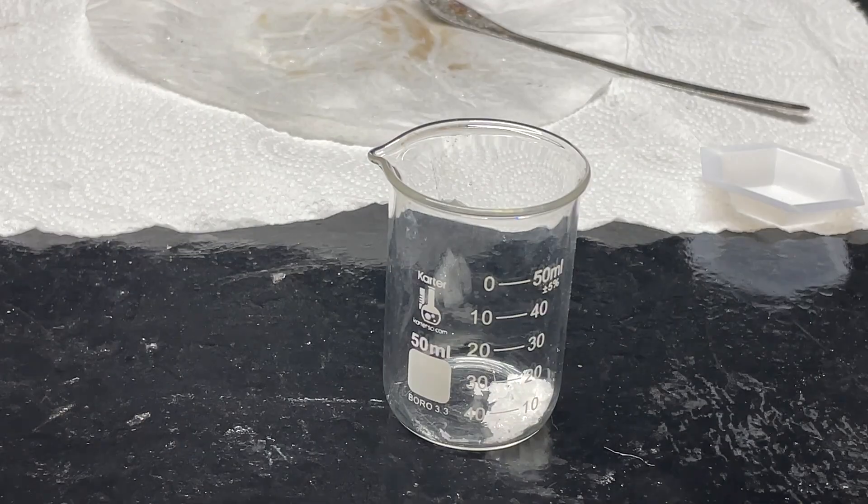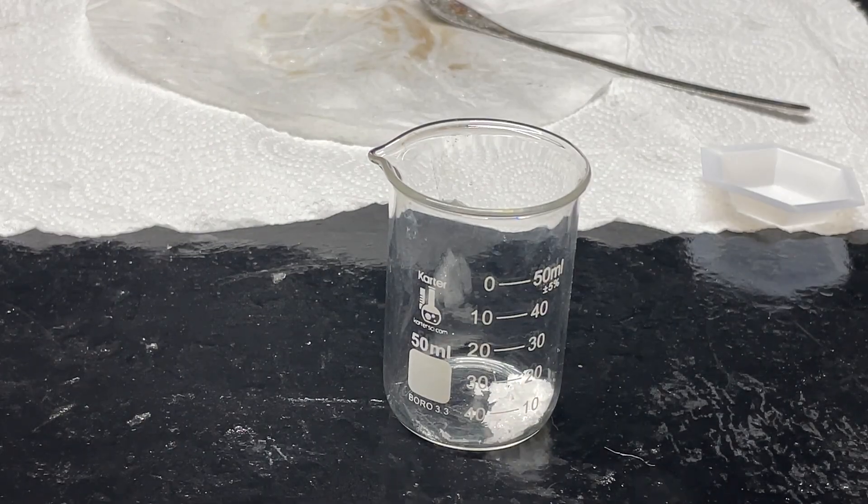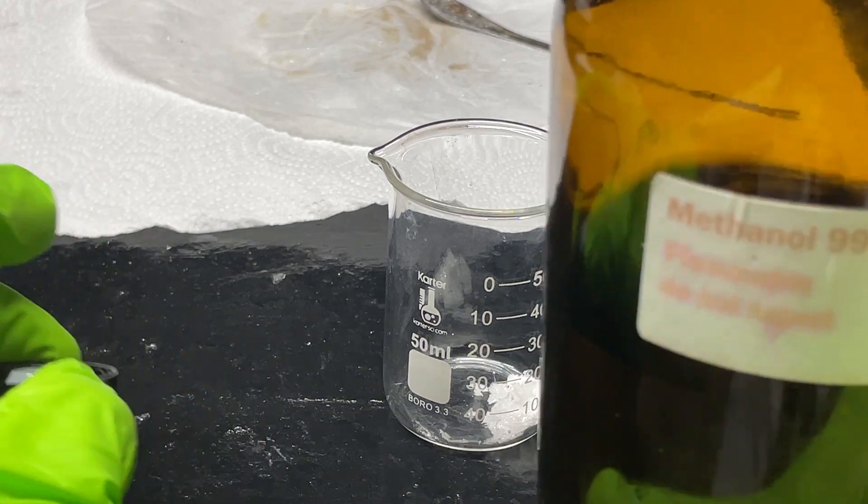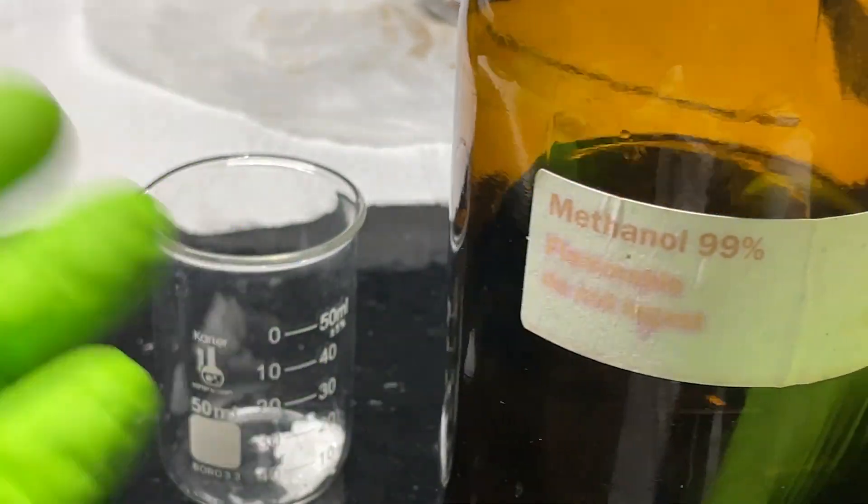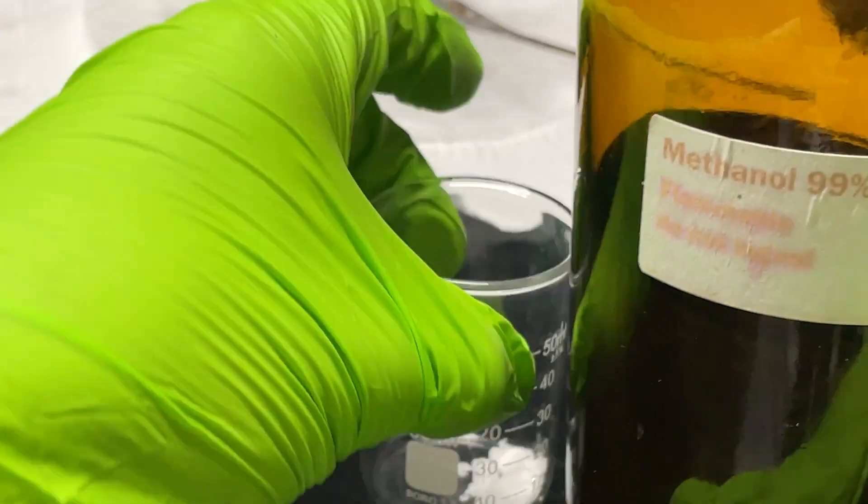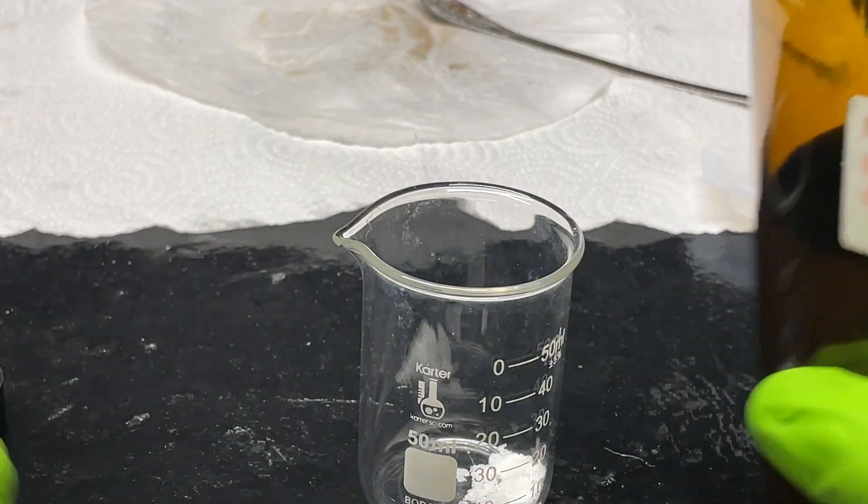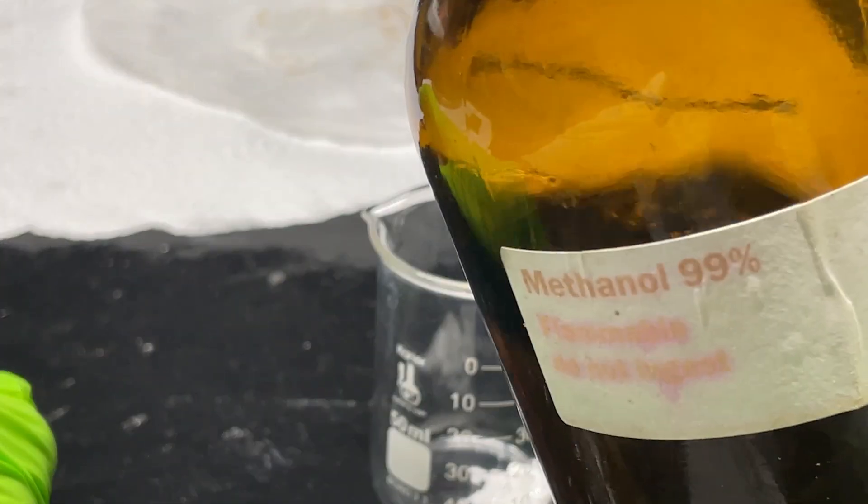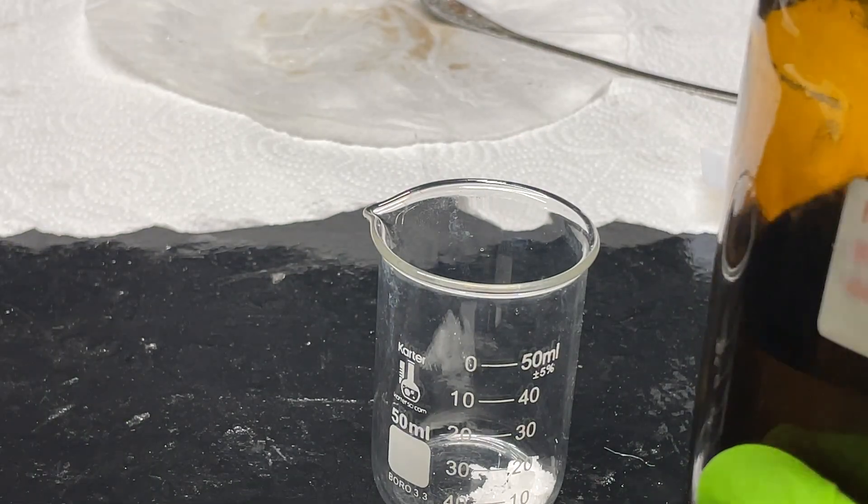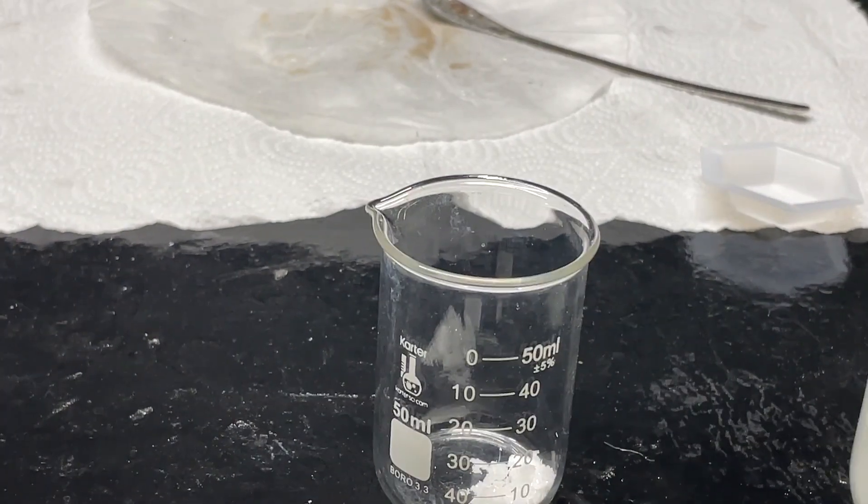Okay now we need to dissolve it in a solvent. So original mace used like a mixture of solvents including propylene glycol, t-butanol and some other stuff. I don't have all those so instead I'm just going to dissolve it in methanol, an organic solvent. This should work perfectly fine.